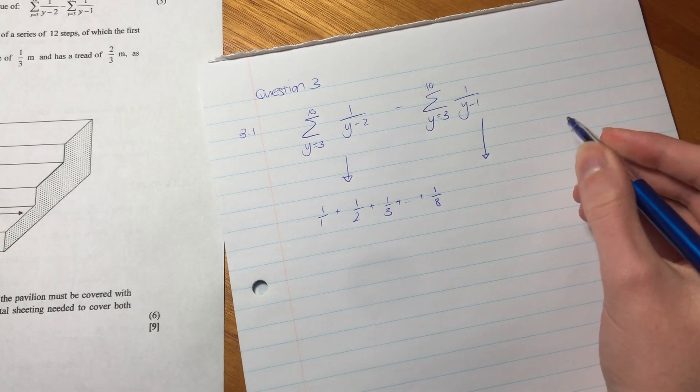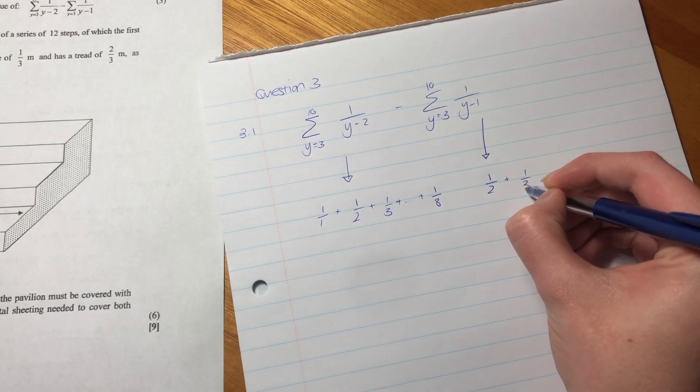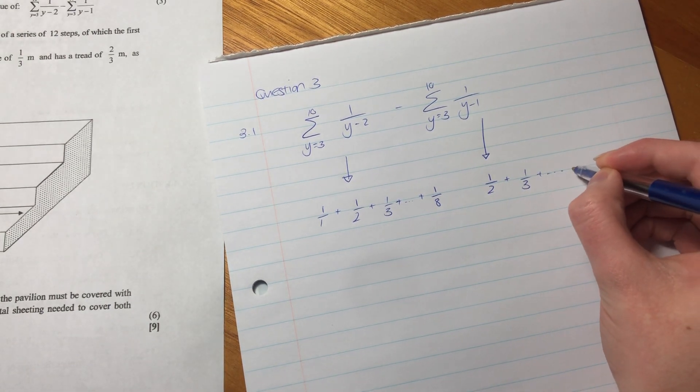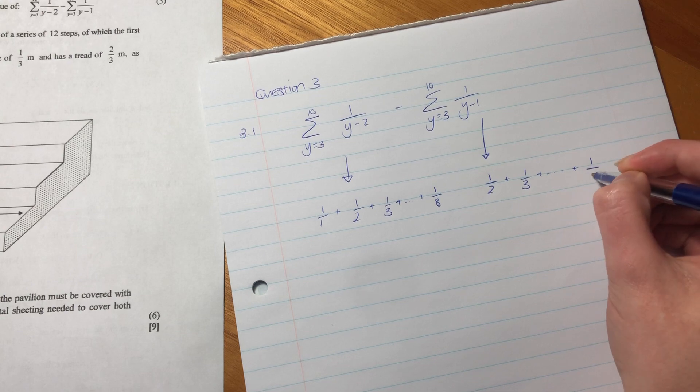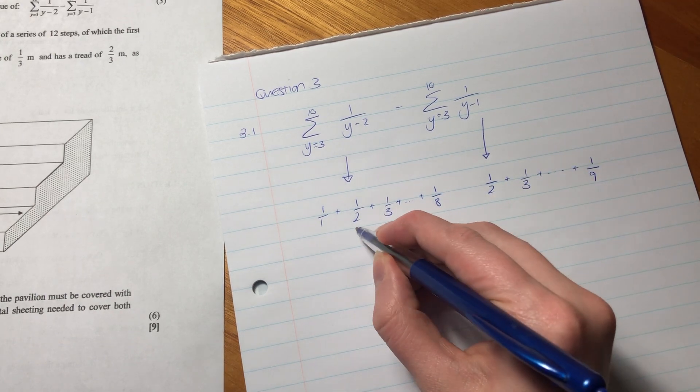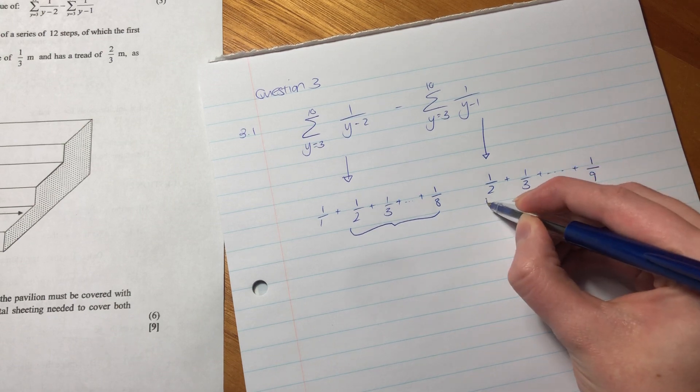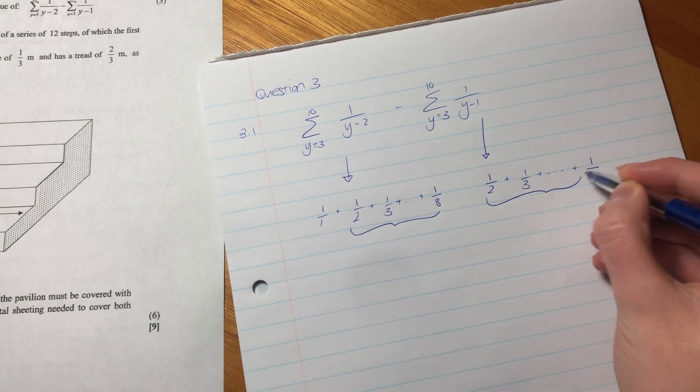Let's do the second sum. It's going to be 1/2 + 1/3 up to 1/9. What we can see here, which is quite important, is that all of these terms are going to be cancelled by those terms.